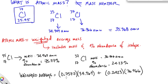So our weighted average is 0.7577, that's our percent abundance, times 34.969, that's the mass of the isotope. We add that to the percent abundance of the next isotope. Remember, it's expressed as a decimal, times the mass of the next isotope.